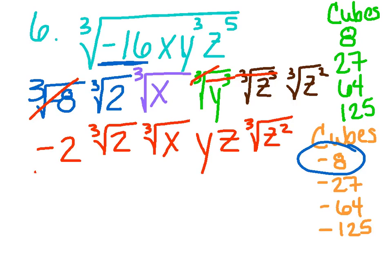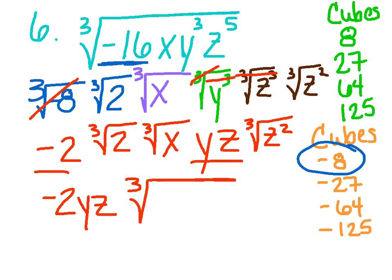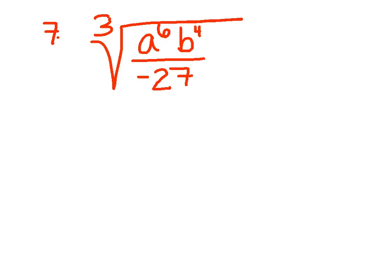All we've got to do is simplify and we're almost home. The cubed root of negative 8 is negative 2. I don't know the cubed root of 2, so we'll leave that. I don't know the cubed root of x — nothing cancels. This cubed root and cube do cancel, so that's just a y. Those cancel — that's a z. And the cubed root of z squared can't cancel. Putting my outside terms together: I've got negative 2, y, z. And then everybody else is in the cubed root: 2, x, and z squared.